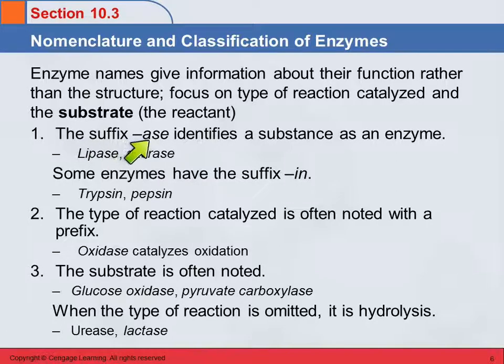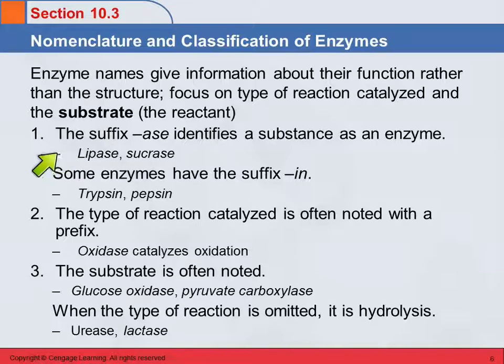The suffix -ase identifies a substance as an enzyme. Anything that ends in -ase — lipase, sucrase, lactase — is an enzyme. It's similar to carbohydrate names like lactose and sucrose, but changing the 'o' to an 'a' indicates it's an enzyme. There are also some enzymes with the suffix -in; two examples are trypsin and pepsin, which were identified earlier and retain their names.